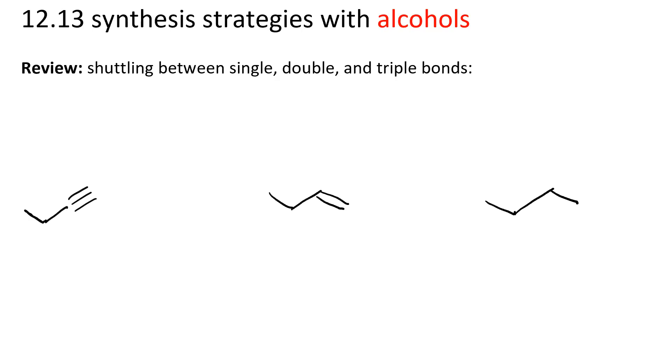Here we have an alkyne, an alkene, and an alkane, all with four carbons. The alkyne is 1-butyne, the alkene is 1-butene, and the alkane is just butane.